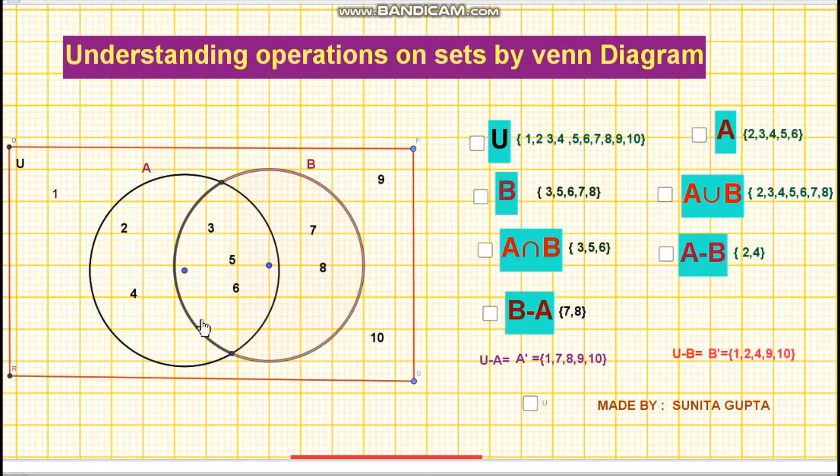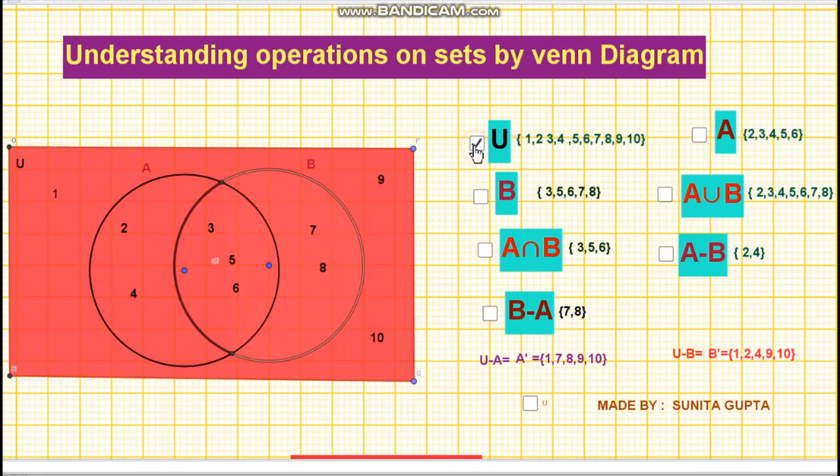This is universal set U. The shaded region as shown on your screen. So elements are 1, 2, 3, 4, 5, 6, 7, 8, 9, and 10.